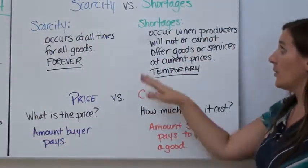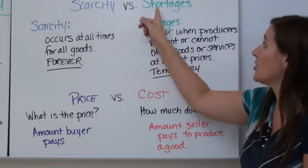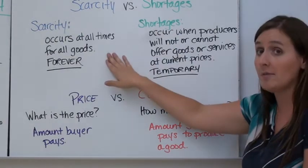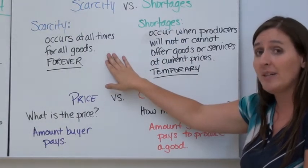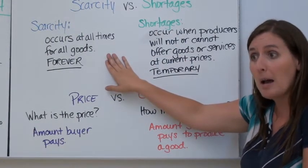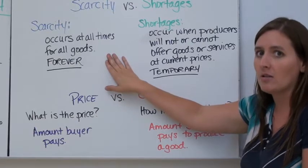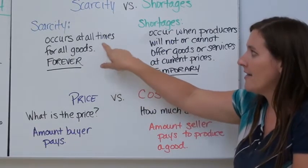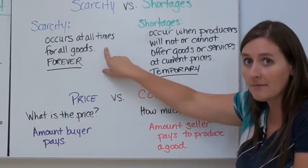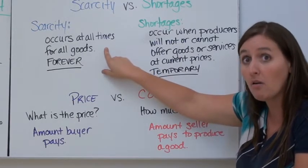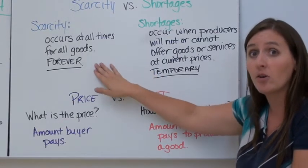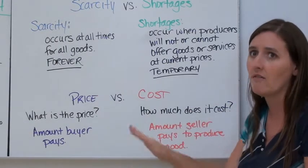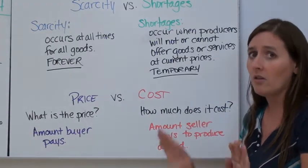The next concept is the difference between scarcity and shortages. Scarcity is the idea that everybody has unlimited needs and wants, but our resources are limited. Scarcity occurs at all times for all goods — it's basically a forever concept. You can never get all of your choices.